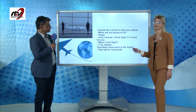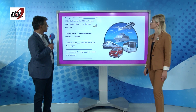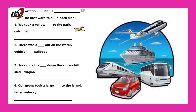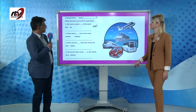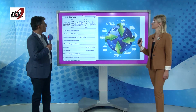For the next activity, write the best word to fill in each blank. 'We took a yellow cab to the park.' 'There was a sailboat out on the water.' 'Jake rode the sled down the snowy hill.' 'Our group took a large ferry to the island.'